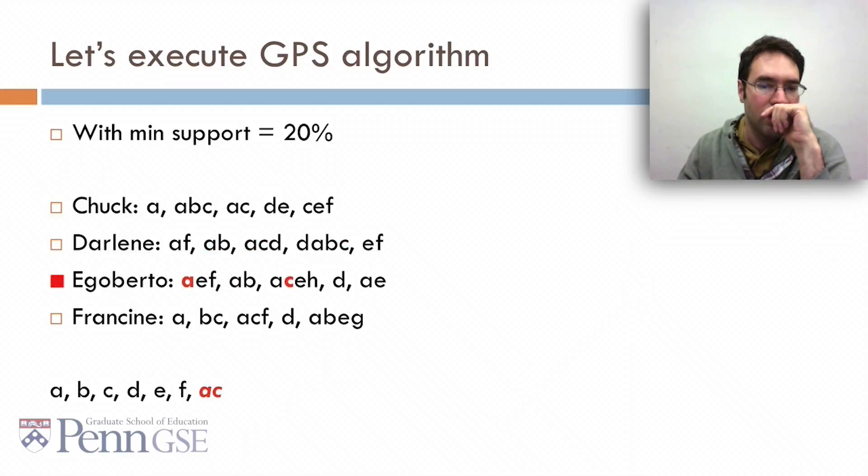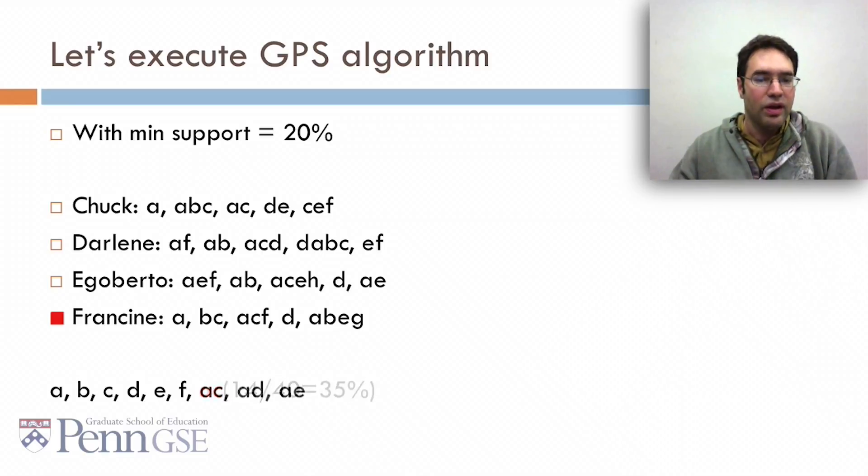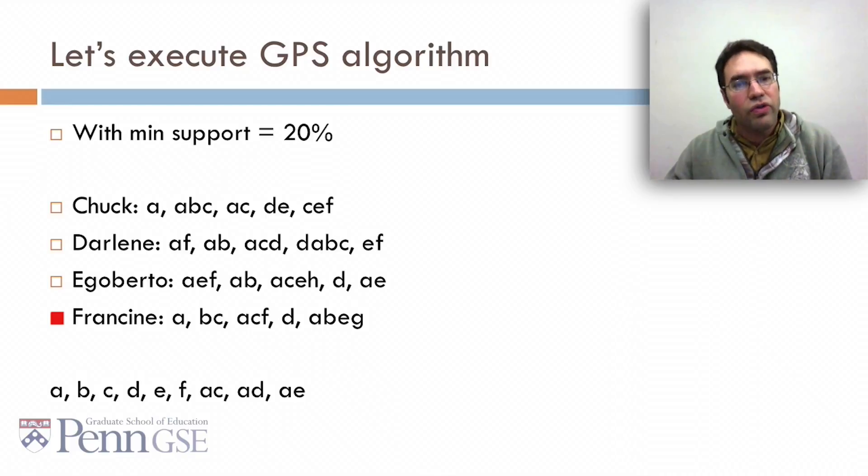We go on looking for A's and C's across Darlene, Egoberto, and Francine. We find that we see AC in 14 cases out of 40, which is 35%. So AC has enough support to keep.